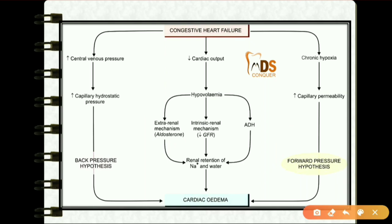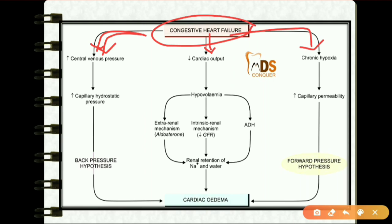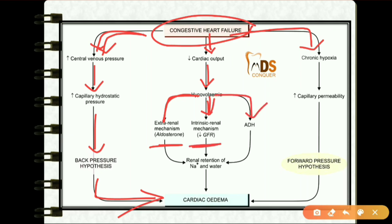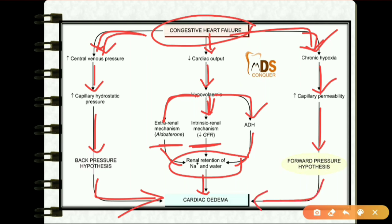The pathogenesis of cardiac edema in congestive heart failure involves three things: increased central venous pressure, decreased cardiac output, and chronic hypoxia. Increased central venous pressure leads to increased capillary hydrostatic pressure, causing cardiac edema by the back pressure hypothesis. Decreased cardiac output causes hypovolemia, leading to sodium and water retention via aldosterone, GFR reduction, and ADH. Chronic hypoxia increases capillary permeability, causing cardiac edema by the forward pressure hypothesis.